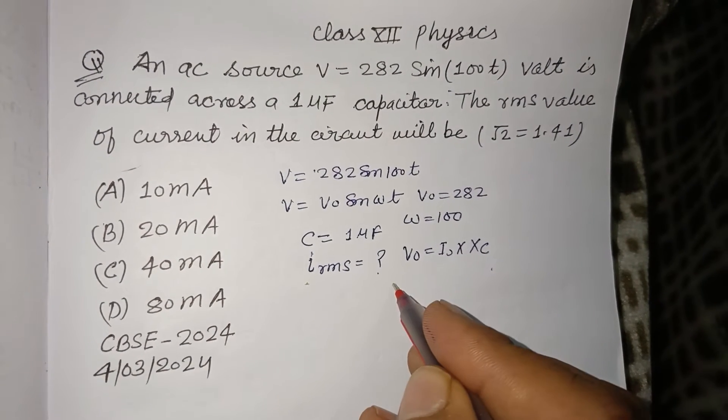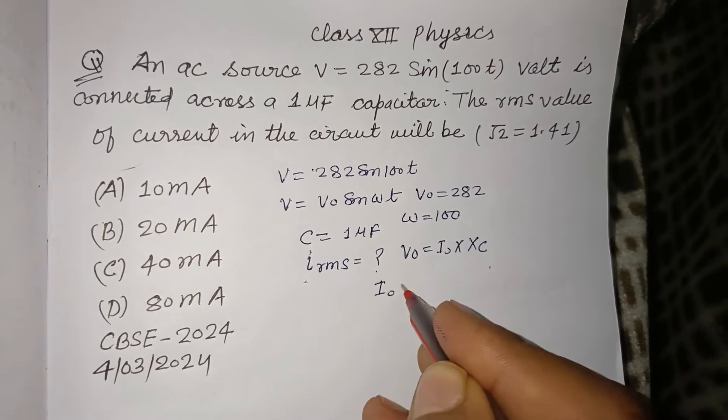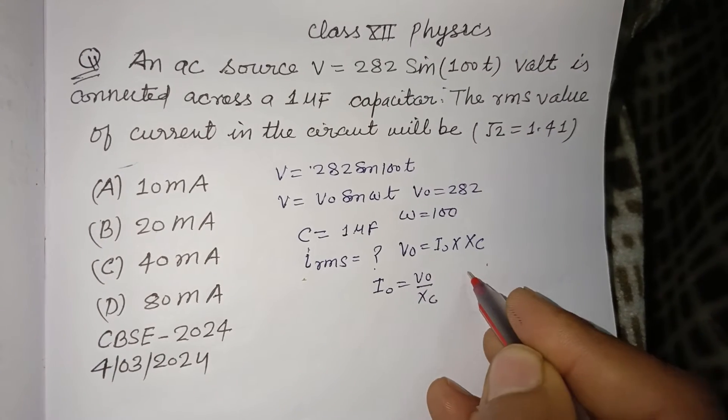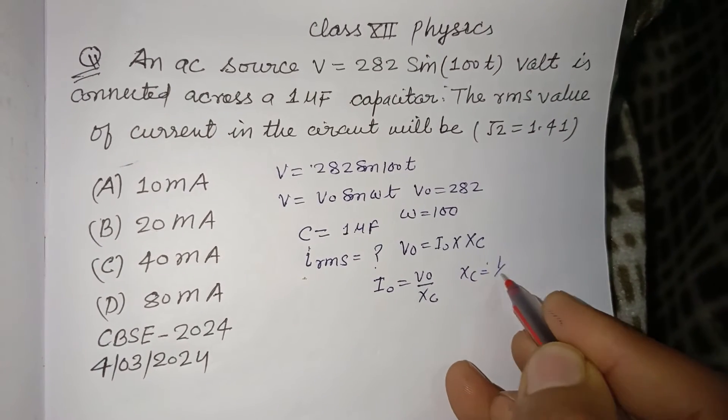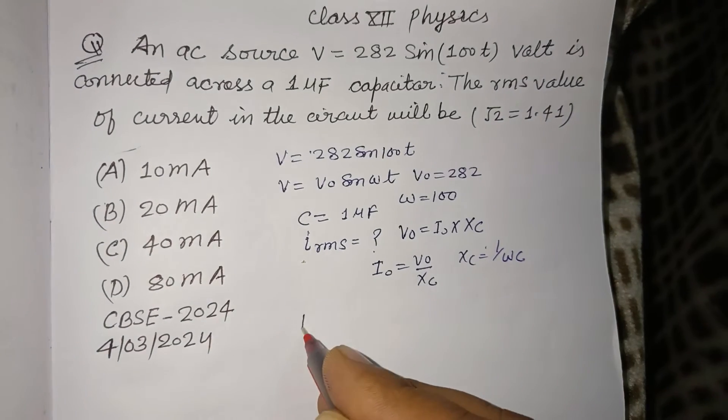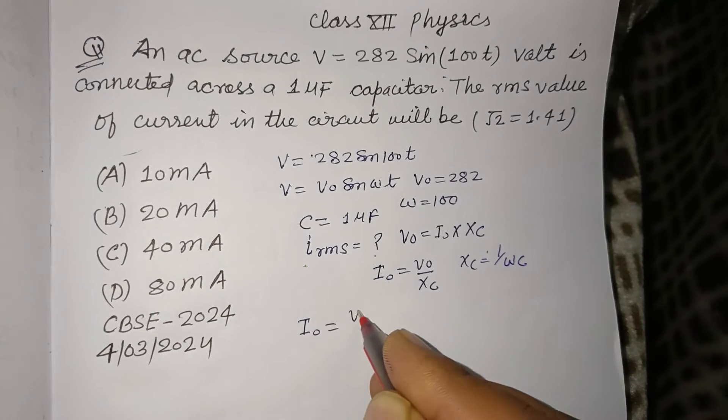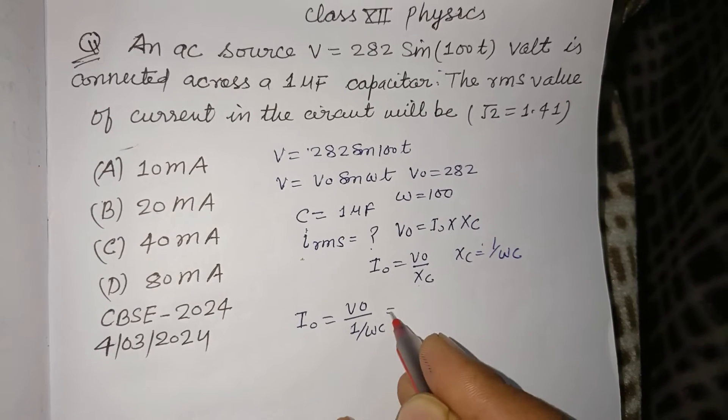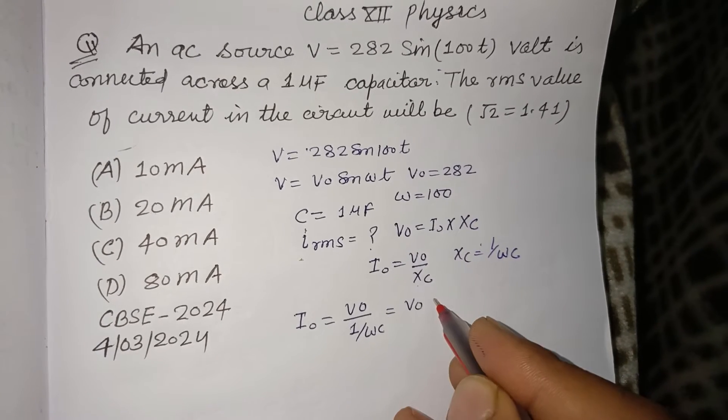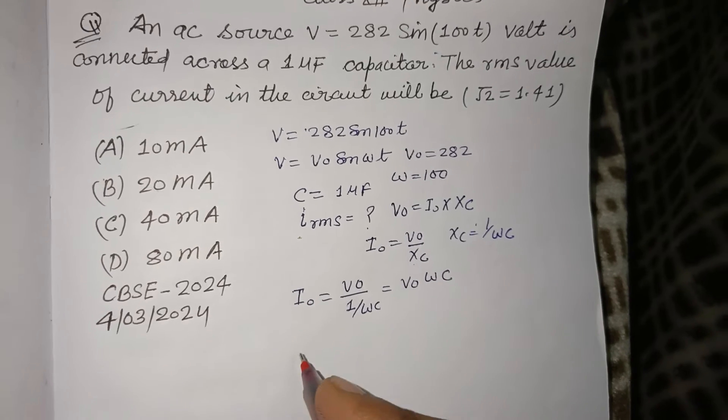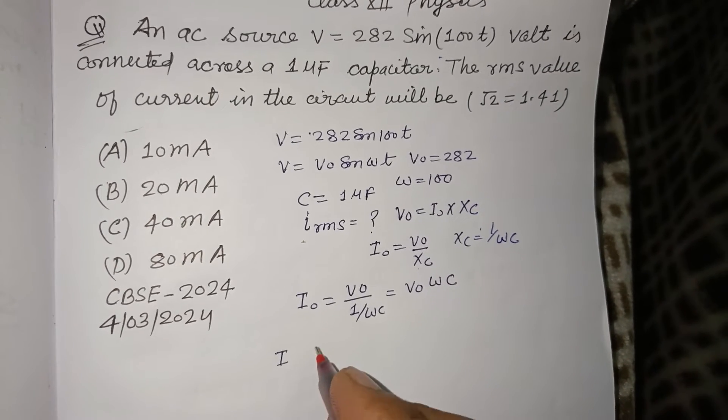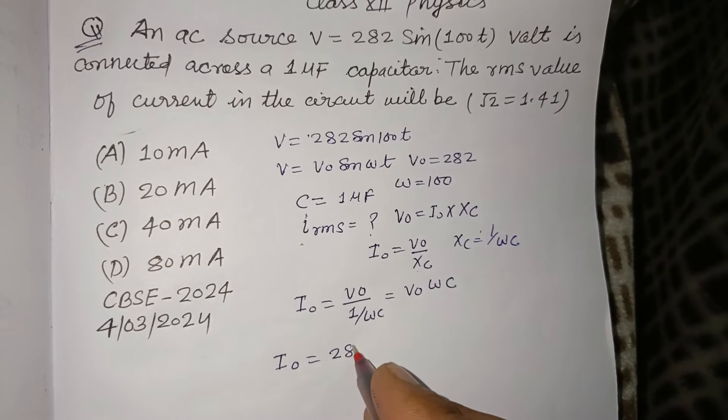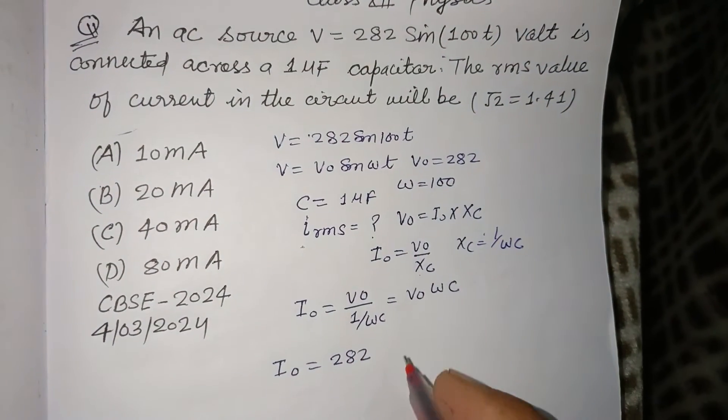Therefore, I0 = V0/Xc. Since Xc = 1/(ωC), we have I0 = V0/(1/ωC) = V0·ω·C. So I0 = 282 × ω × C.